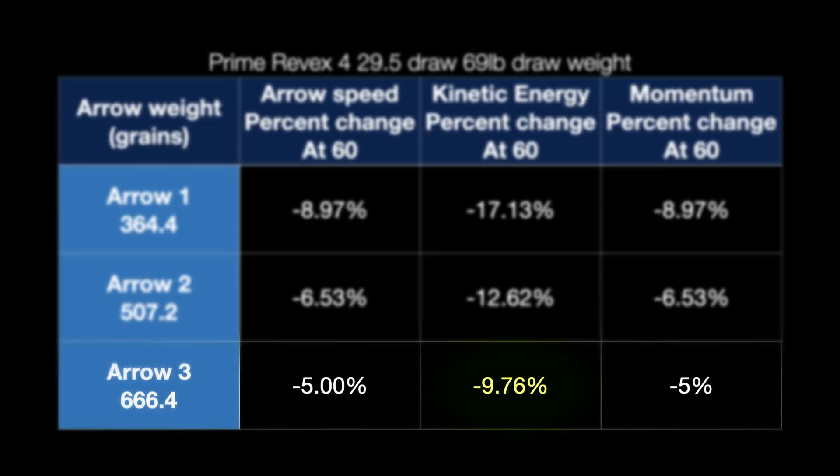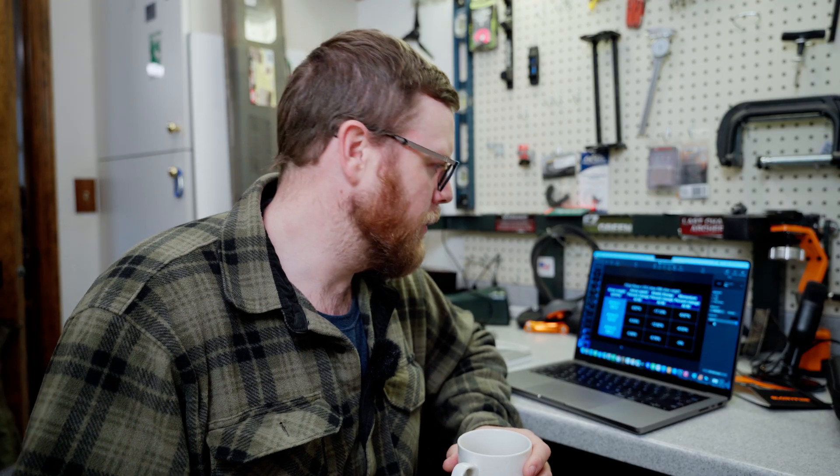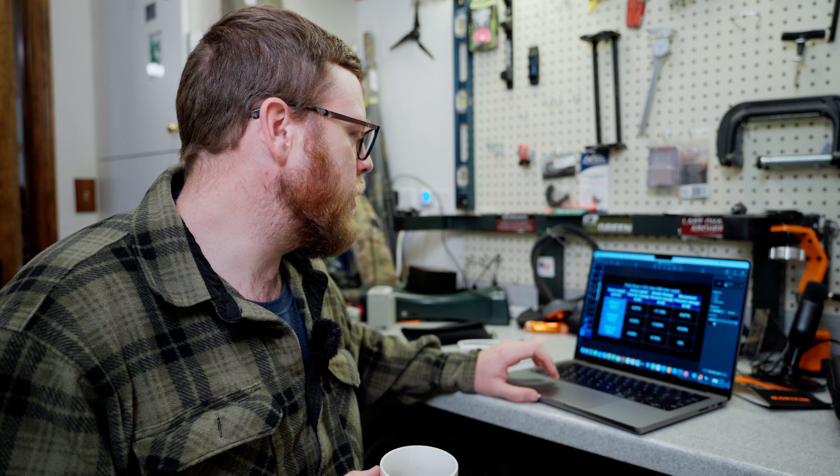Now we get to the heavy arrow — the 666-grain arrow. The heavy arrow lost 9.76% of its energy from zero to 60 yards. That's not nearly as significant a drop as going from 364 to 507 grains. You will experience a taper — there is a diminishing return of how much mass you add versus how much energy retention you get, and that's going to depend on your own preferences. All of this comes down to say: the heavy arrow retains more energy downrange.